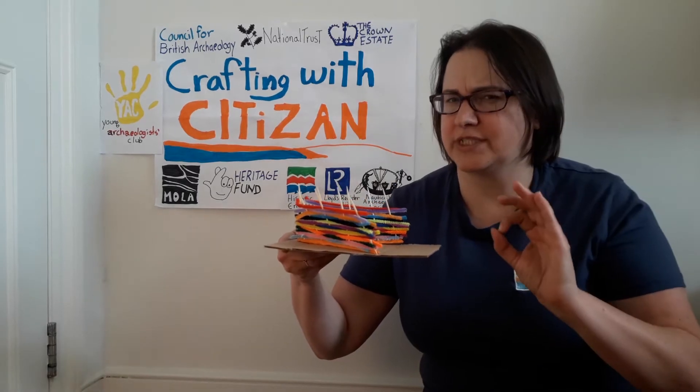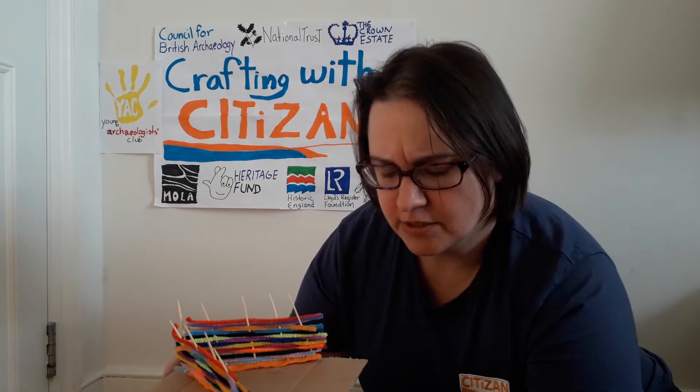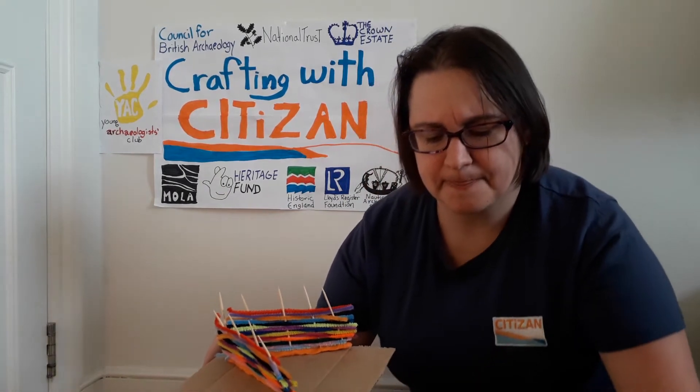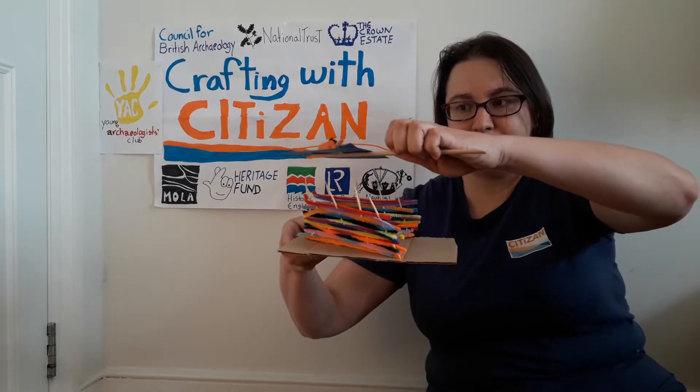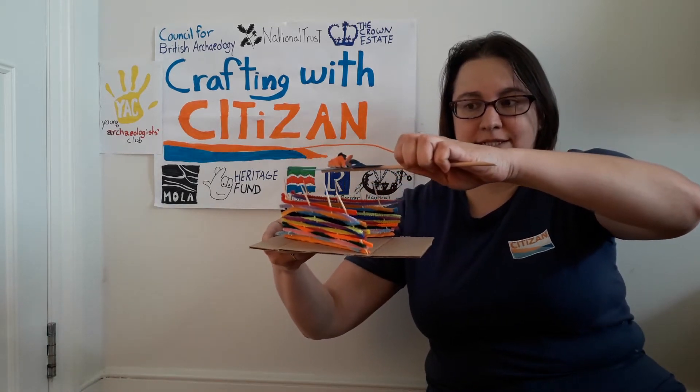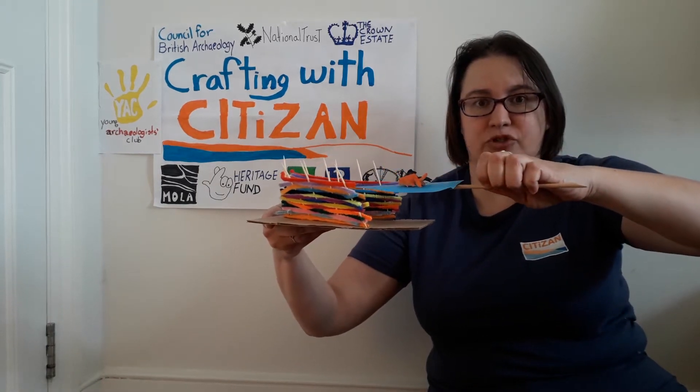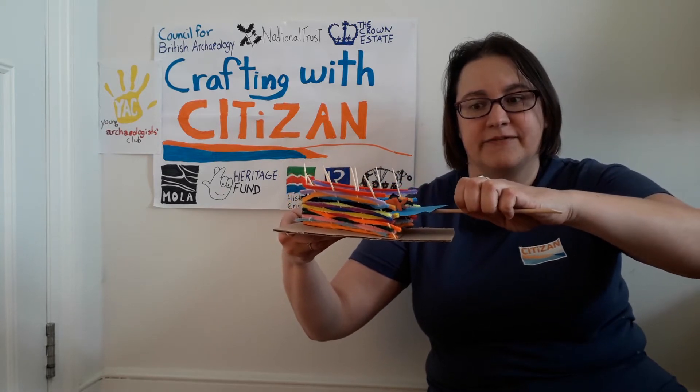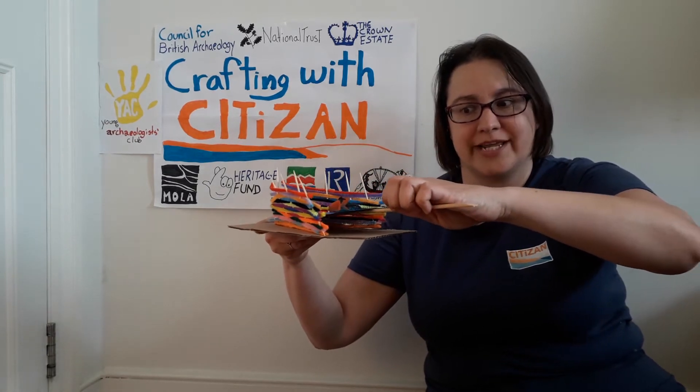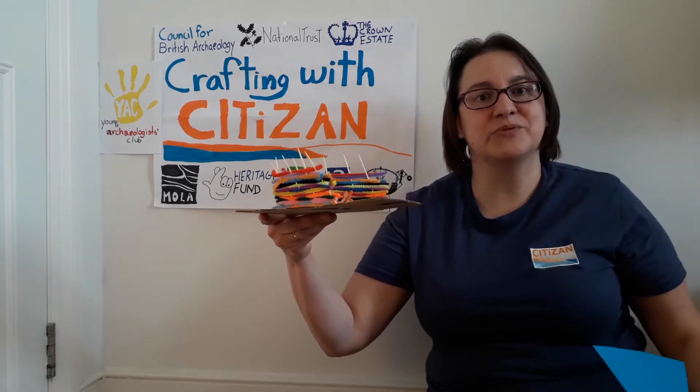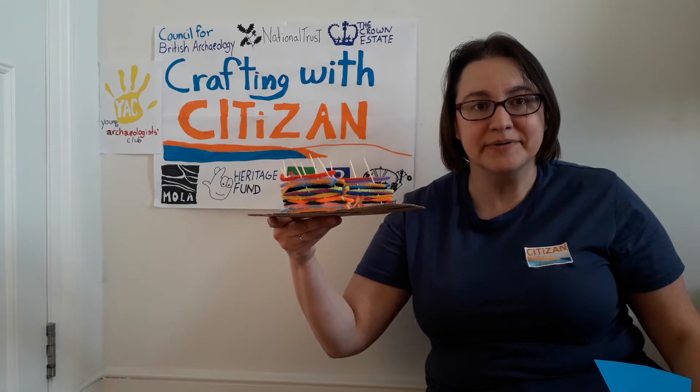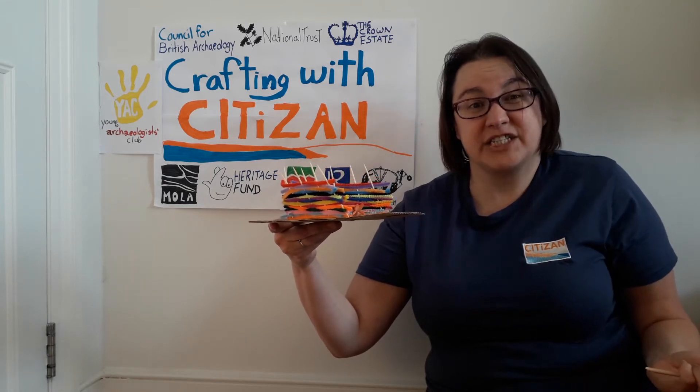So what would happen is that the tide would come in like this and fill up the trap. The little fishies would be swimming along in here, happy to be, and then when the tide went out the little fishies would be stuck in the trap and everybody could have a fishy dinner.